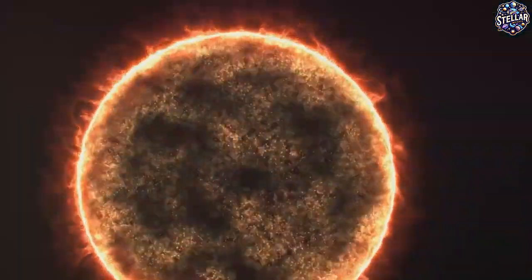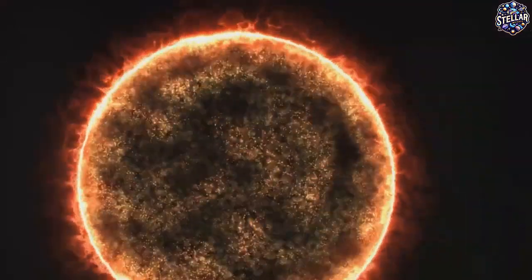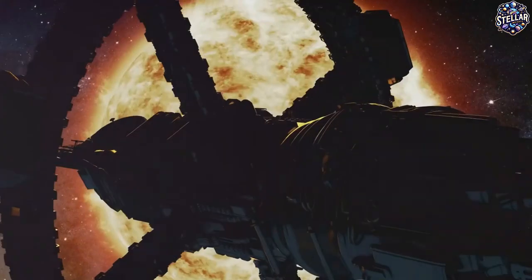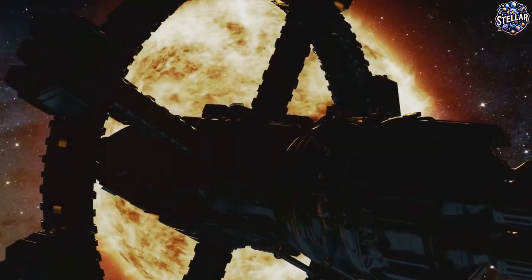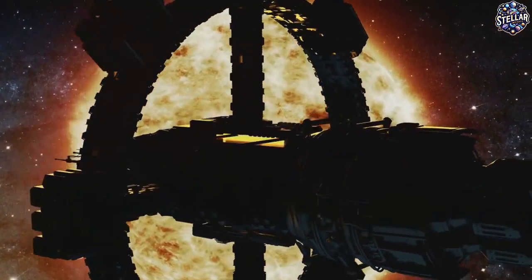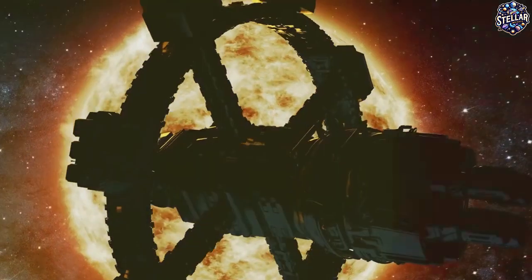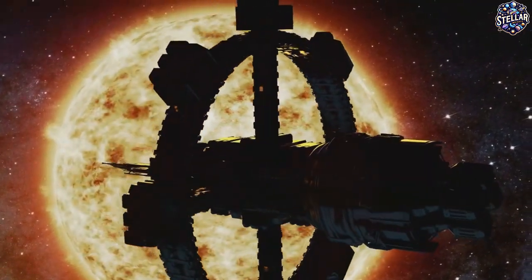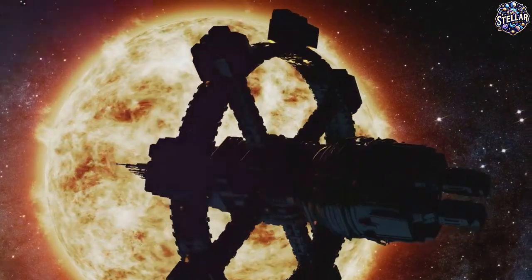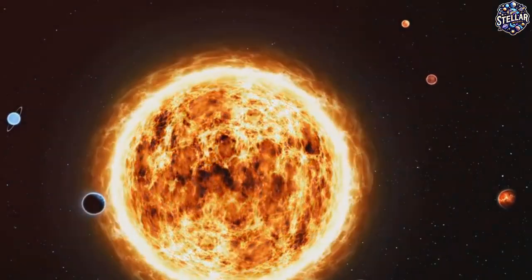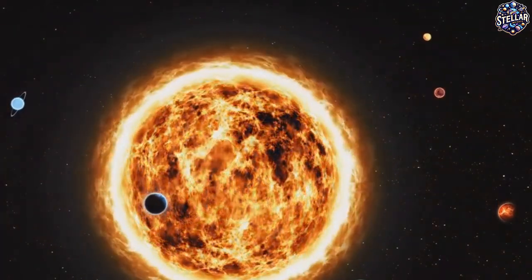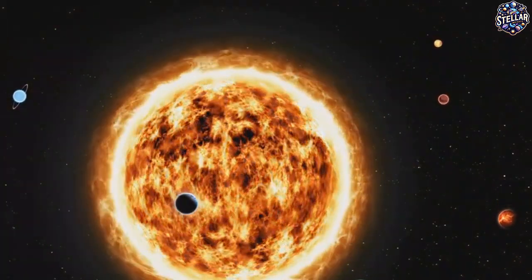Imagine a civilization so technologically advanced that it harnesses the energy of its entire star. Welcome to stage two. Now visualize this civilization erecting gargantuan structures around its sun. These theoretical structures are known as Dyson structures, named in honor of physicist Freeman Dyson, who first proposed the idea in 1960. Our own sun, an ordinary star, emits a staggering 384.6 Yotta watts of energy. That's a number with 26 zeros.